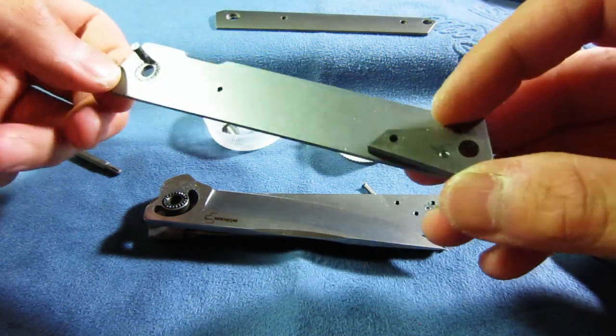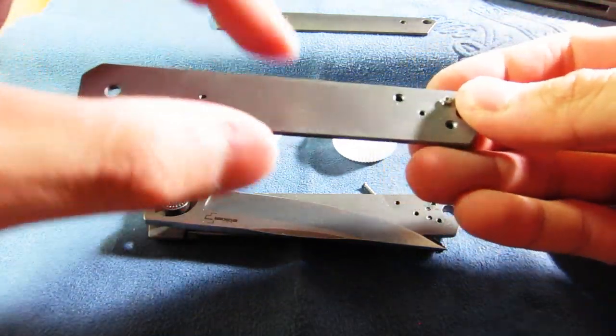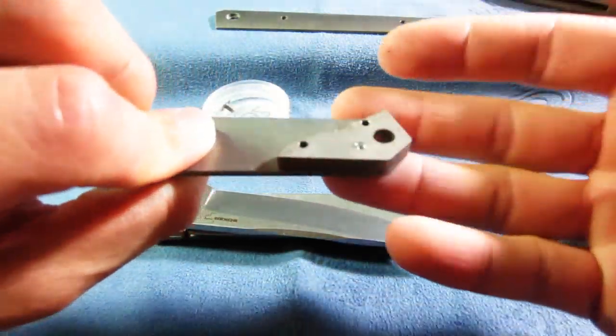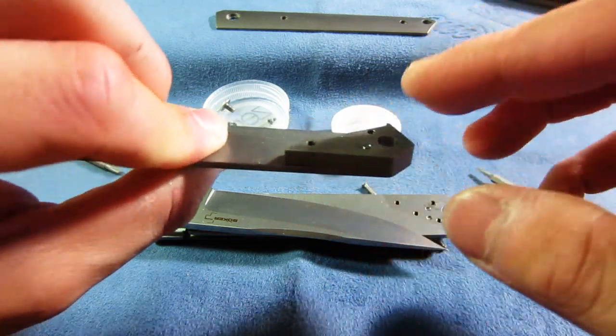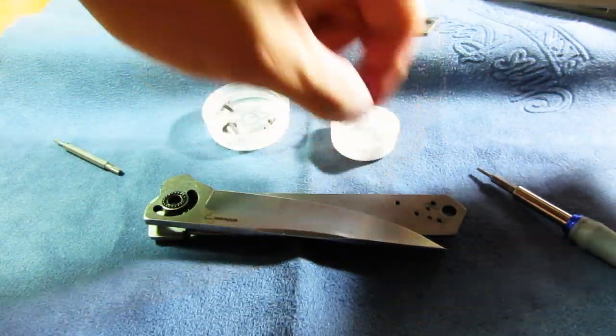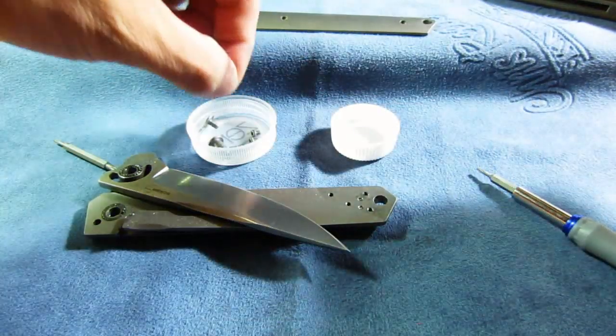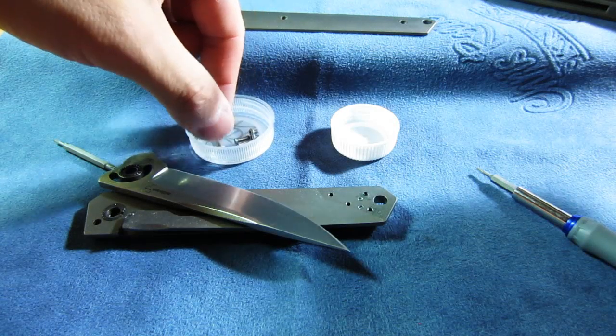Knife is coming apart, oh there we go. So there's the titanium backspacer and this is the stainless steel liner. Backspacer right there, I'm going to put that here, we should put our screws here. And guys always, you know, do your best to keep track of which screws go where, you definitely do not want to lose track of what goes where, cause a headache.